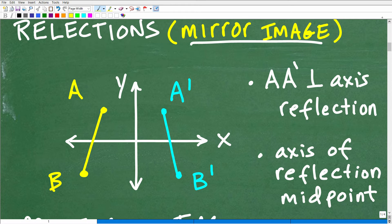But this is what is really key. So here is our pre-image, the line segment A, B, right here. This image, A prime, this is called A prime and B prime, this is the reflection. This is the result of the reflection.